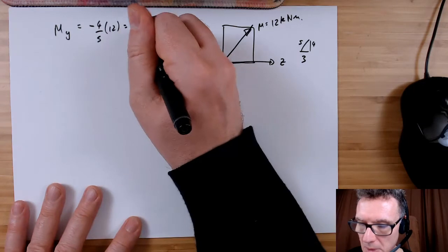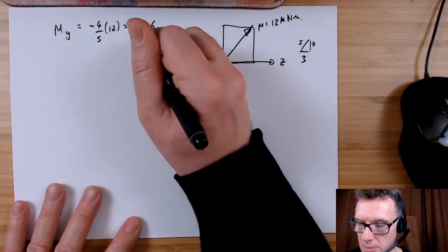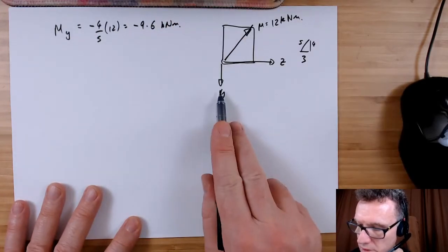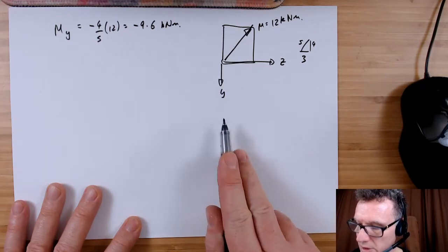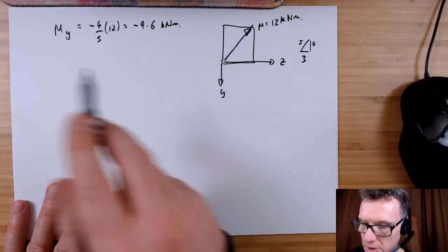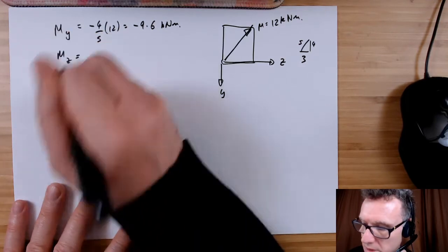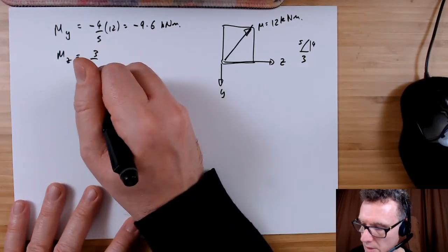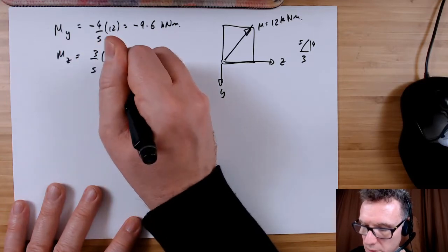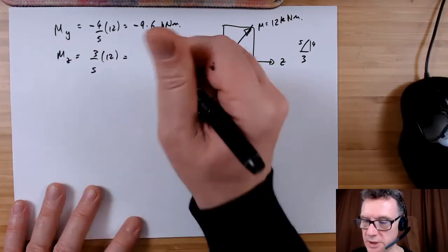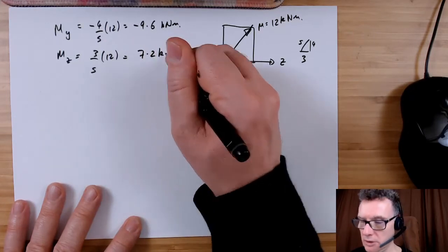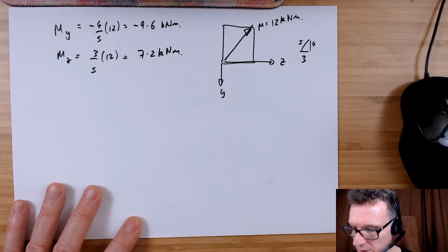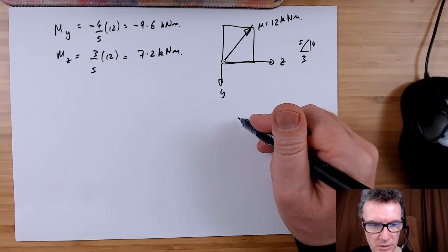That will be minus 9.6 kilonewton meters. Notice we're pointing in the wrong direction, so we're pointing upwards but Y is pointing downwards. Now swing this through this direction. MZ swing through and that'll be three over five times 12, which will be 7.2 kilonewton meters.